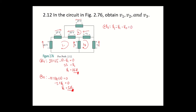We have the values for V1 and V2, so now we can solve for V3. Therefore, V3 is equal to V1 minus V2. Substituting the values: V1 is equal to 35 and V2 is equal to 5, so V3 is equal to 35 minus 5, giving you 30 volts.